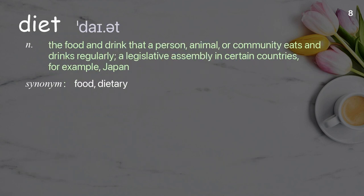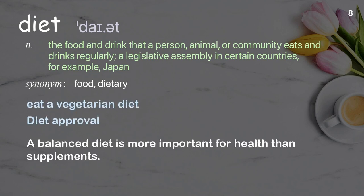Diet: The food and drink that a person, animal, or community eats and drinks regularly; also a legislative assembly in certain countries, for example Japan. Examples: Eat a vegetarian diet, diet approval. A balanced diet is more important for health than supplements.